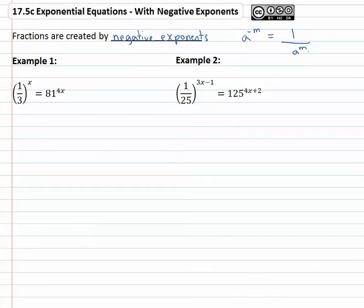We can use this property in reverse, and if we recognize a fraction, we'll just rewrite the exponent as a negative exponent. So for example, if we have one over three to the x equals eighty one to the four x, the one over three can be rewritten as three with a negative exponent, in this case three to the negative one.